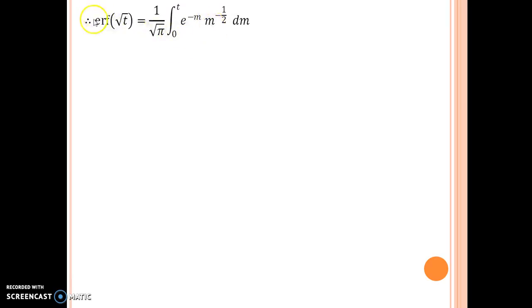So in order to find the Laplace of this function, I am not going to go by the traditional definition method. What I am trying to do now is, I am going to find the Laplace of m to the power minus half. What does it have here? It is same as the Laplace of t to the power minus half. It would be gamma of minus half plus 1 divided by s to the power minus half plus 1 and the final answer to this is root pi upon root s.